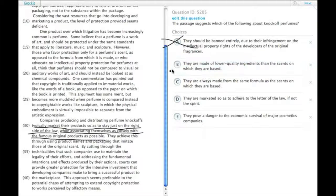Choice B: they are made of lower quality ingredients. No. Choice C: they are always made from the same formula. No, just that they're close.